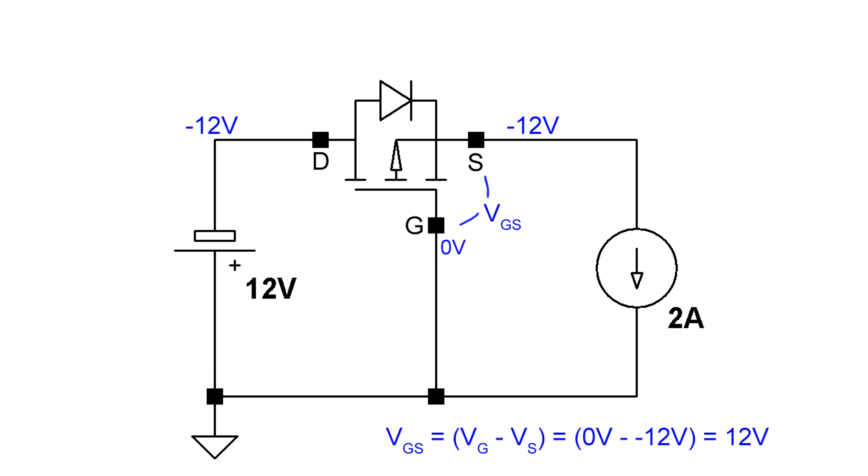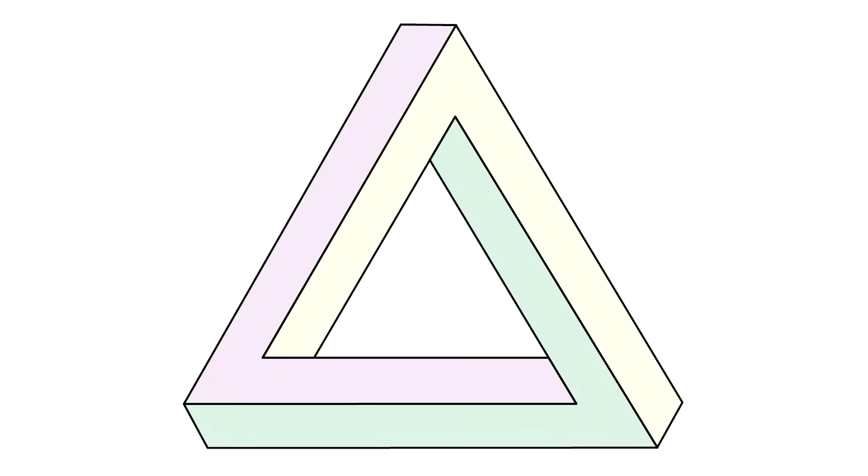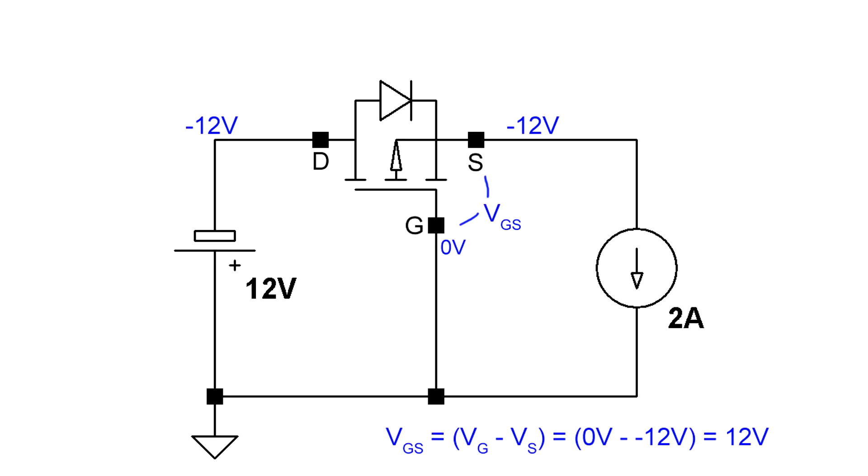Now let's calculate VGS again. VGS is 0 volts minus minus 12 volts, so VGS is 12 volts. Wait a minute, VGS has to be minus 4 volts or less for the MOSFET to turn on. And we just calculated VGS to be plus 12 volts when the transistor is on. What we've got here is an impossible contradiction. So our initial assumption of the MOSFET being on has to be incorrect.